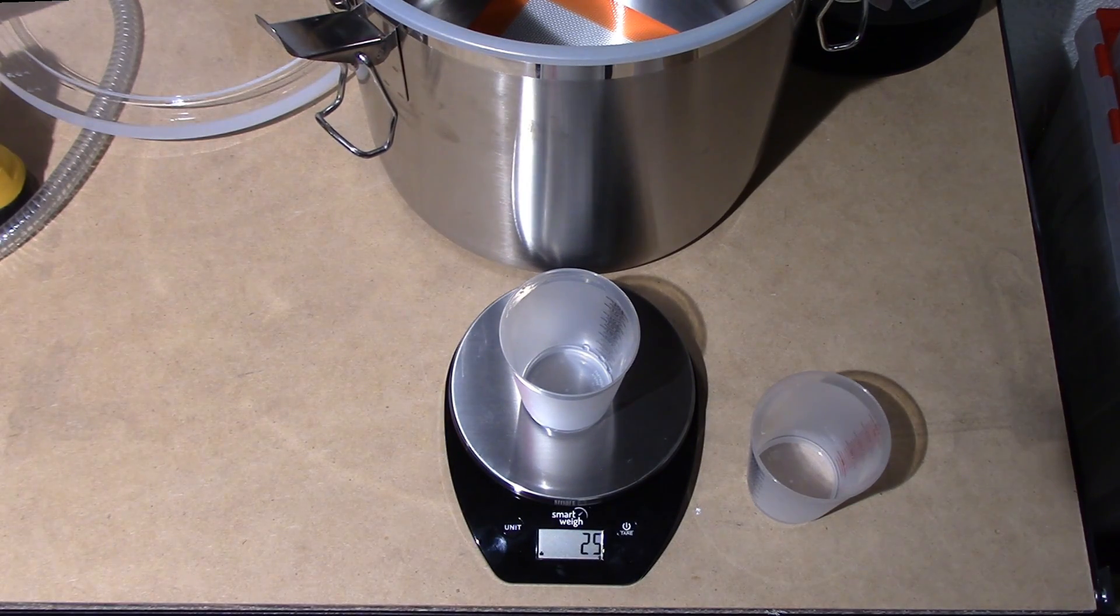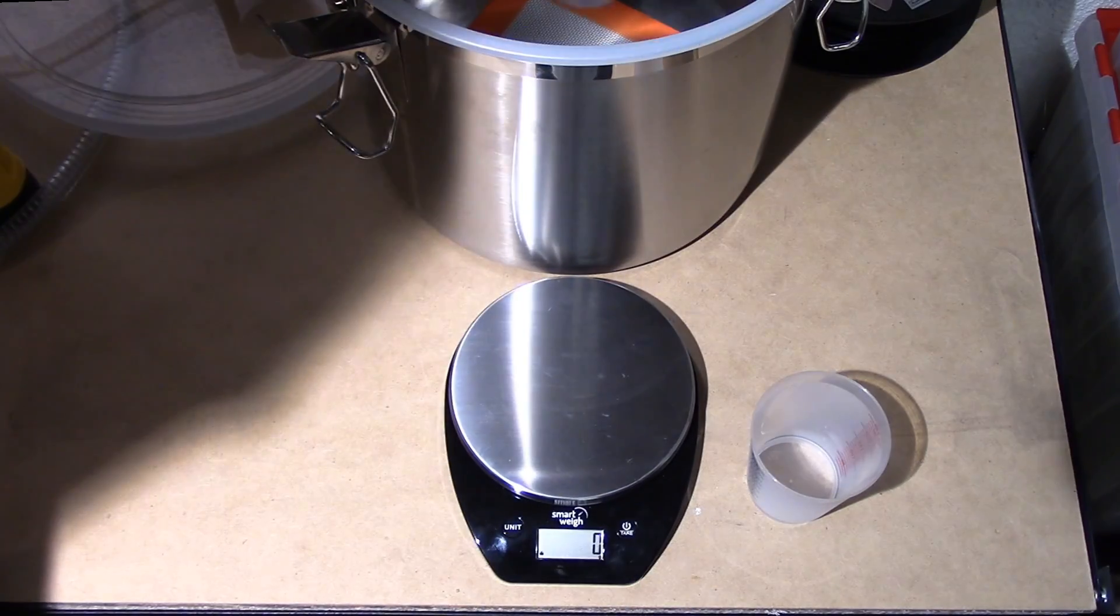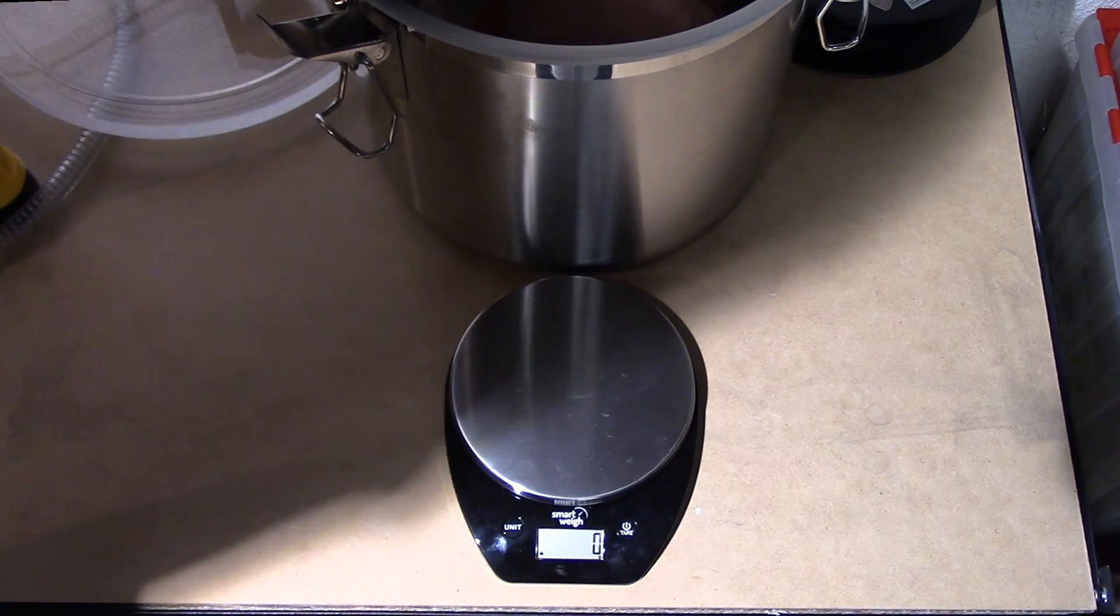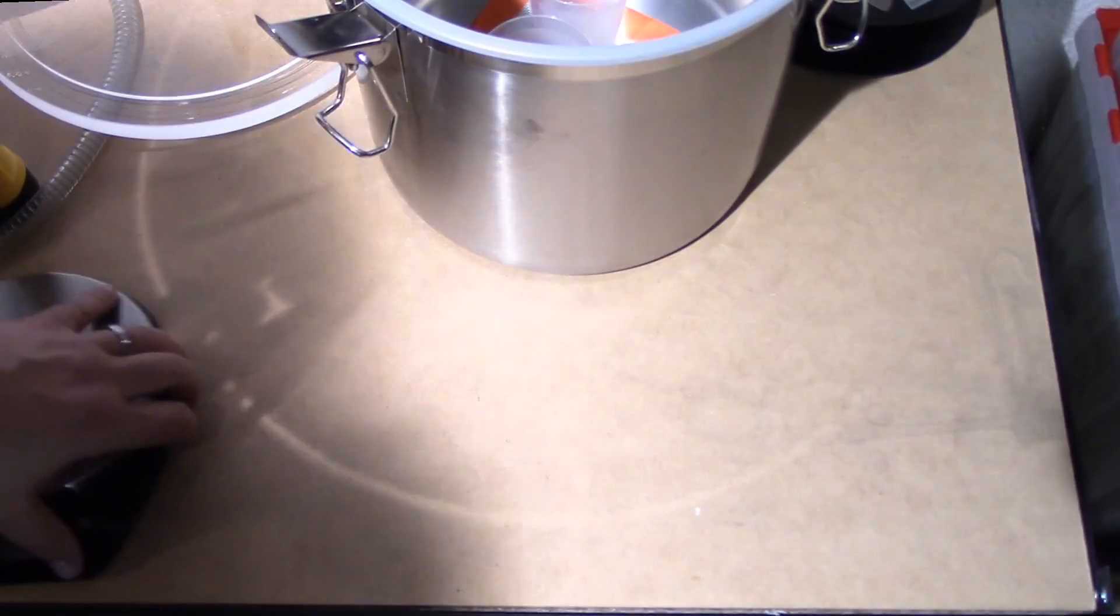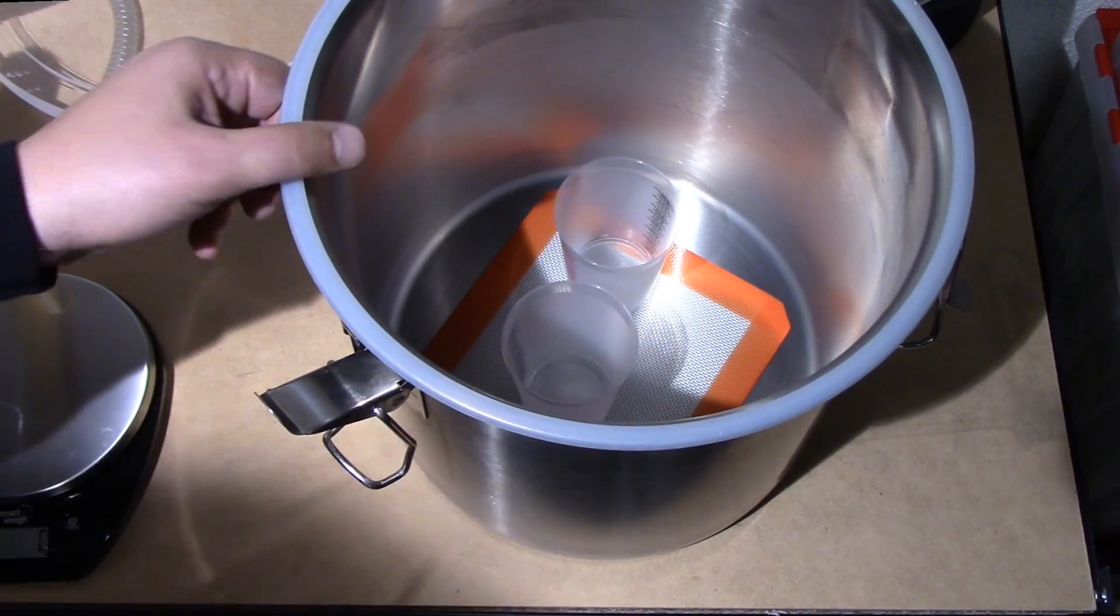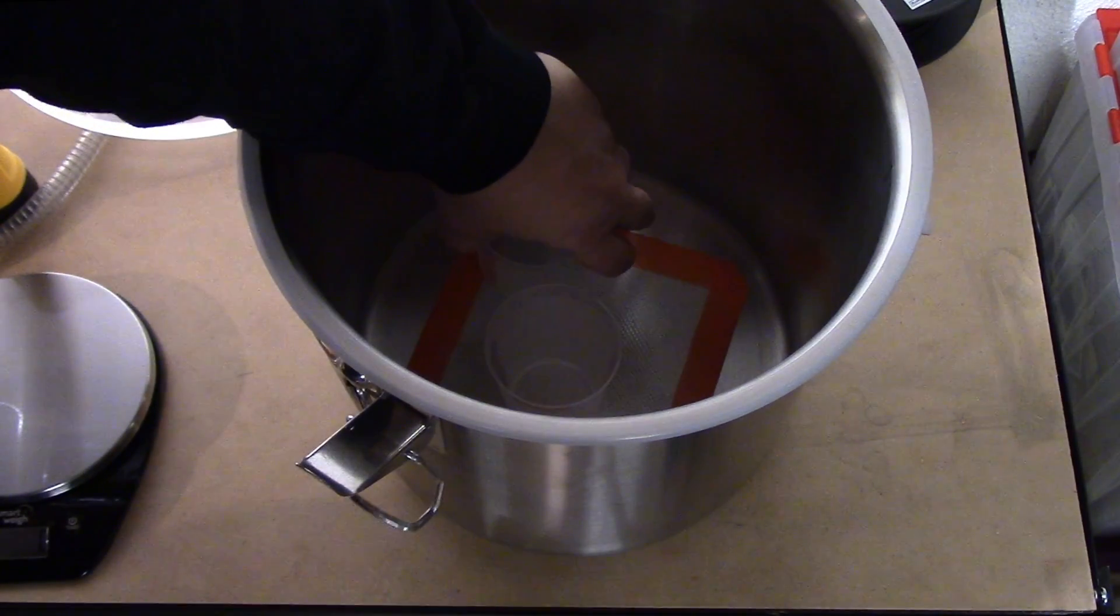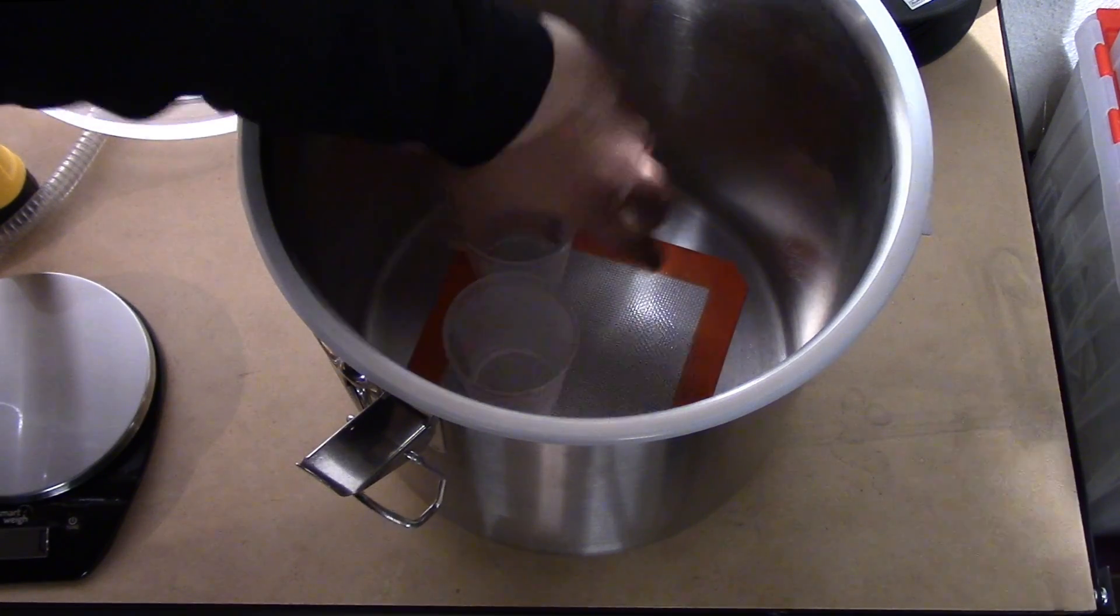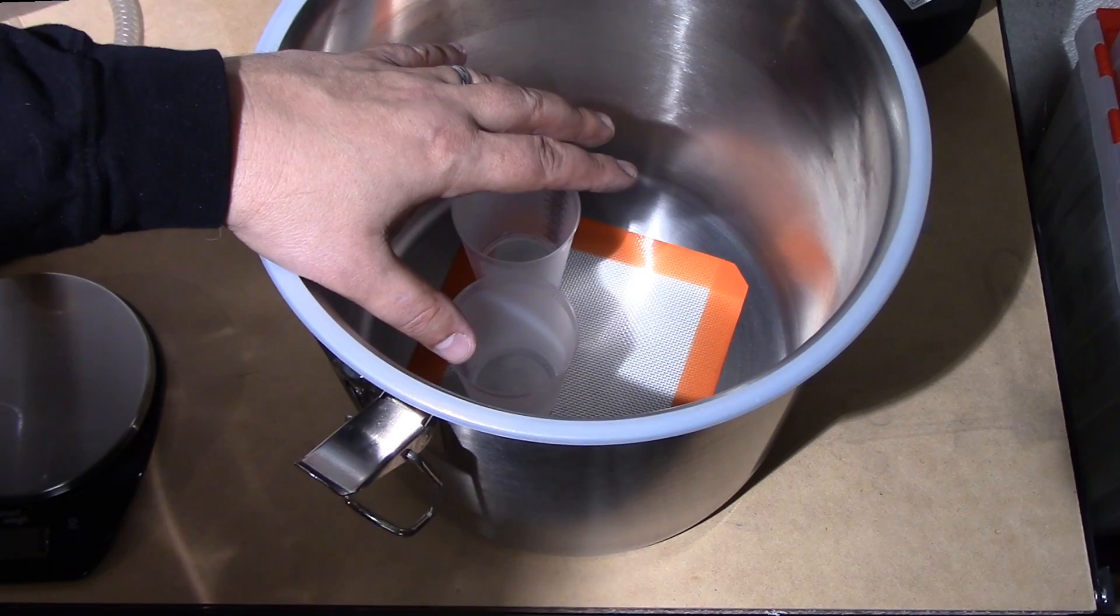So what I'm going to do is place both of these into the vacuum chamber as such and let's move the scale out of the way and bring the vacuum chamber over here so you can see it. So I've got warm water in the front, cold water in the back. Now I've got it on the silicone pad to insulate it from the bottom to keep it from becoming a heat sink.